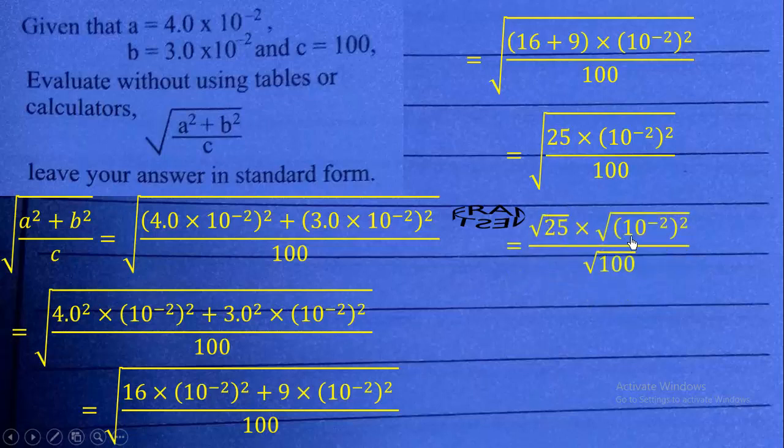Now, what do we do next? We need to take square root of each of them. So, square root of 25 will give you 5. Square root of 100 is 10.